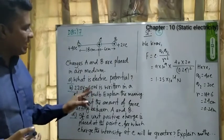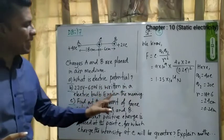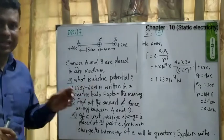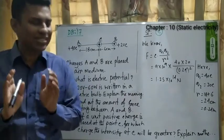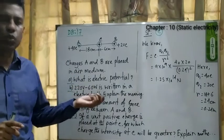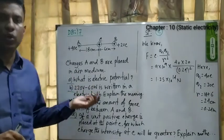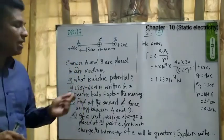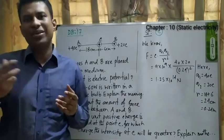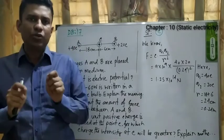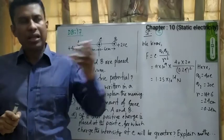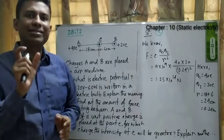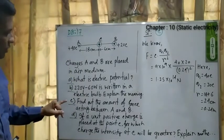The second question is an understanding-based question: what does '220 volt and 60 watt' written on an electric bulb mean? It means if a 60W bulb is connected to a 220 volt potential difference, it will illuminate to its highest extent and will convert 60 joules of electric energy to heat and light energy per second.